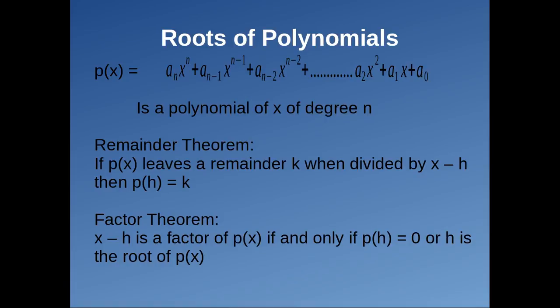Now I will go straight to basic theorems related to polynomials. Suppose P(x), a polynomial, is divided by another polynomial x minus h. The remainder would be P(h), or the value of the polynomial P(x) when x is substituted by h. The root of a polynomial is the value of x for which the value of P(x) is 0. The factor theorem states that x minus h can be a factor of P(x) if and only if P(h) equals 0, or h is the root of the given polynomial P(x).